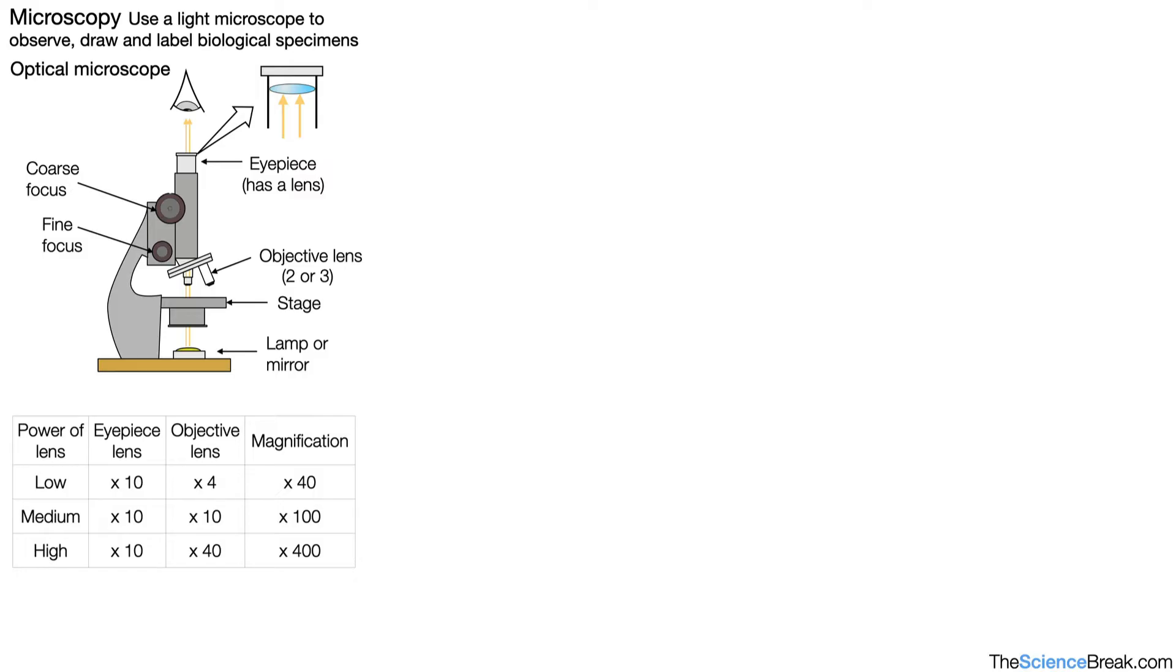Remember your light microscope or your optical microscope might be slightly different and you must look at the power of the different objective lenses. When drawing cells from a microscope we use the above table to make a note of the magnification of our diagram.